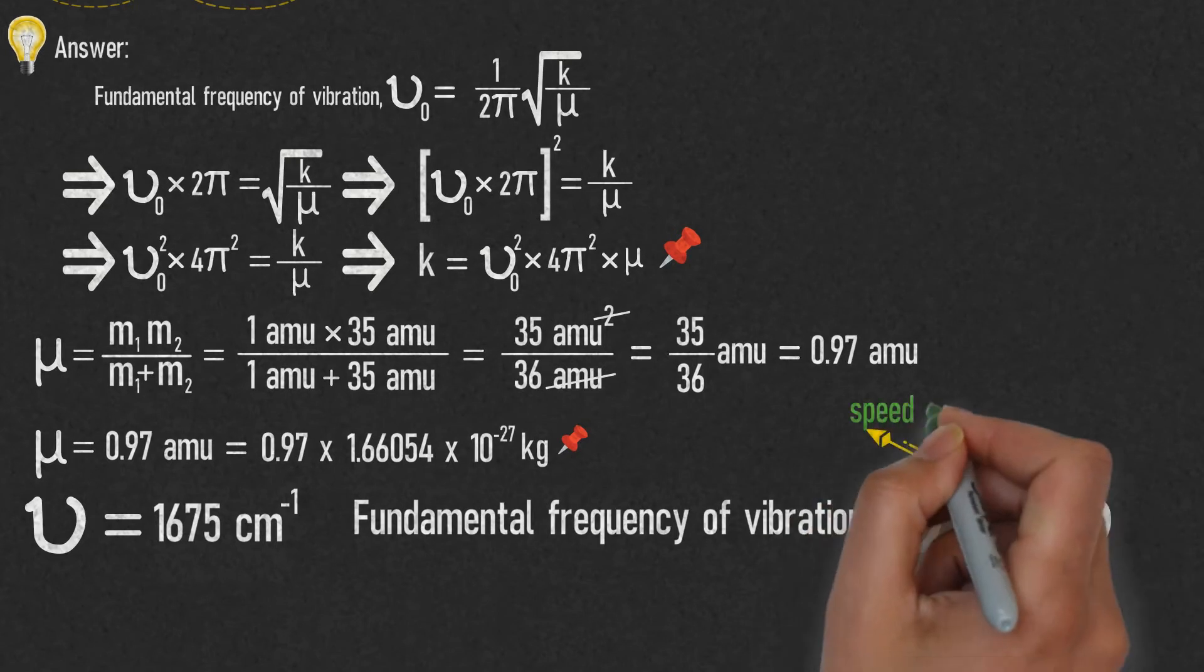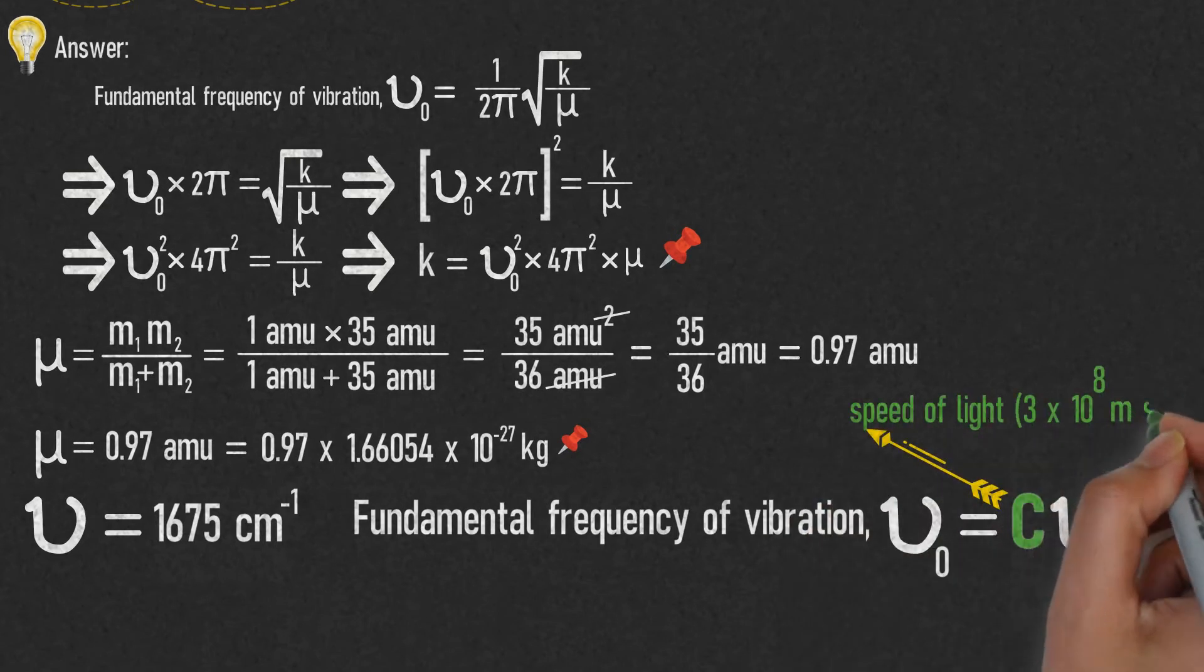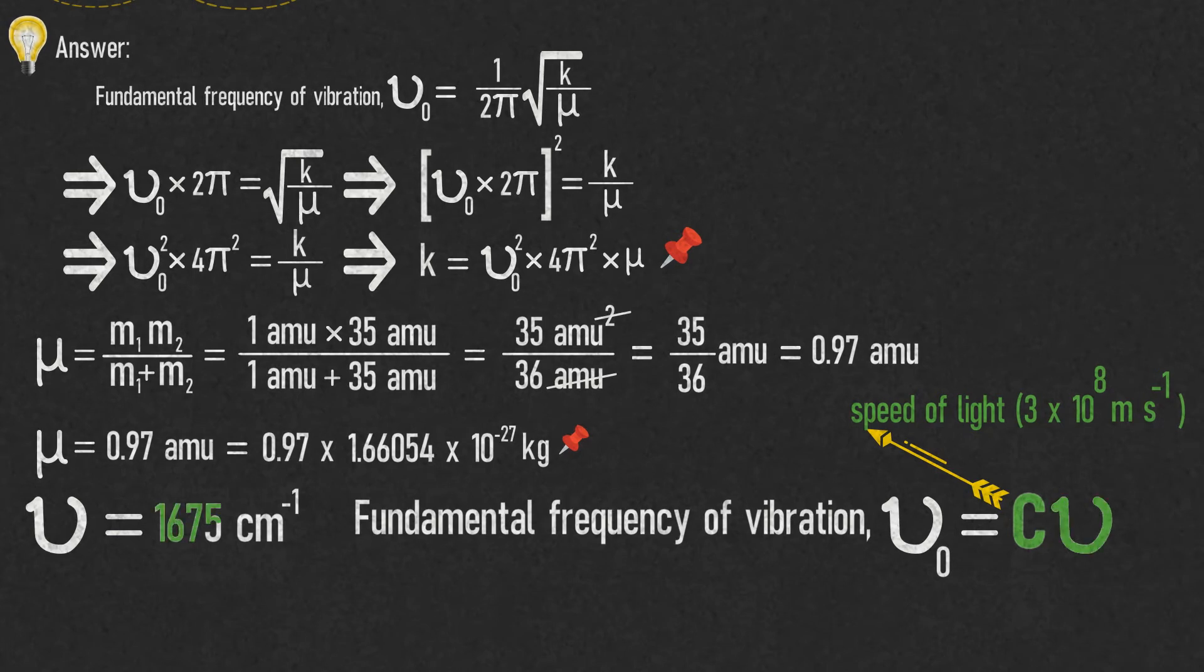c represents the speed of light, which is 3 × 10⁸ m/s. And from the question, ν̄ = 1675 cm⁻¹.